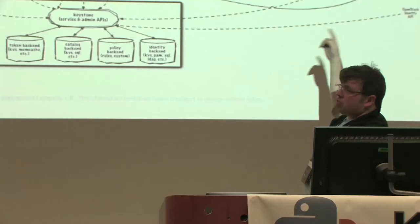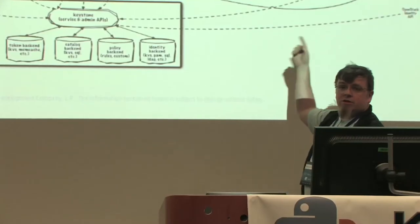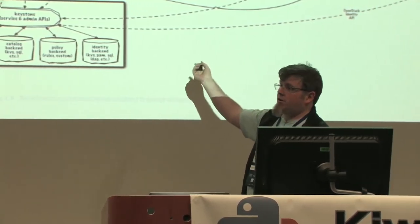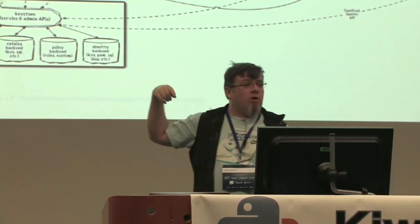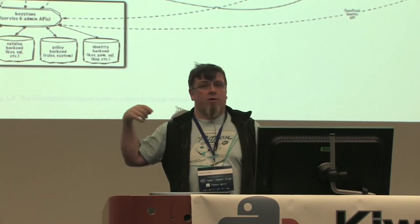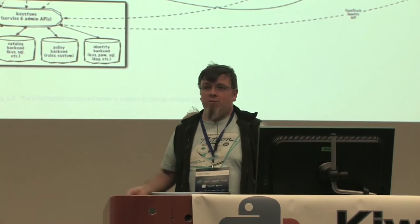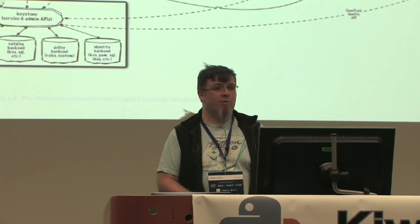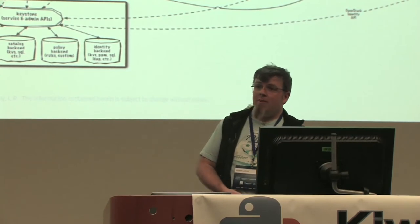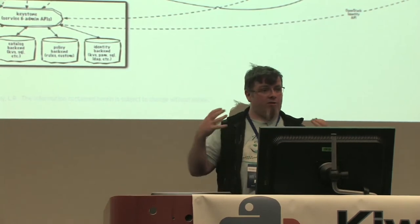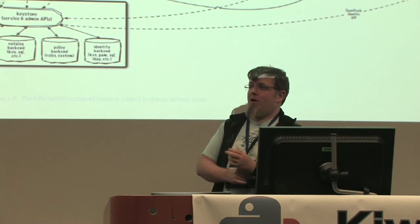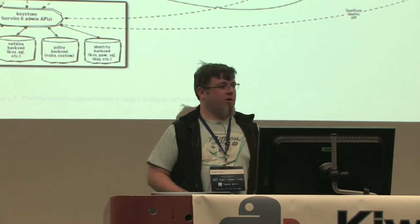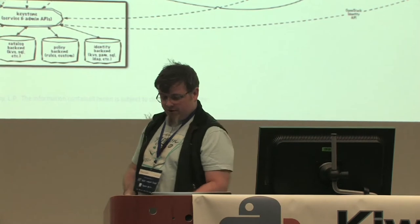Almost all of these services talk across each other — Nova talks to Glance, Glance talks to Keystone. You're not in an isolated environment, so a unit test is going to be mocking out most of what goes on. From a quality perspective, unit tests help you catch very coarse problems but they don't stop lots of things propagating through and causing actual serious grief.